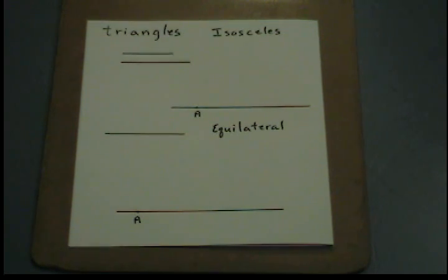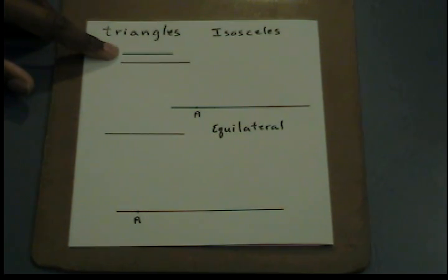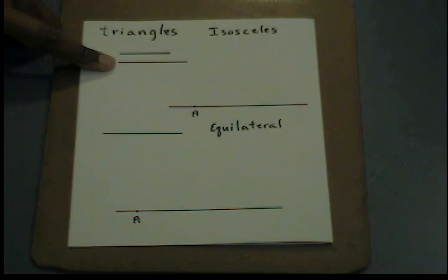So first, in constructing an isosceles triangle, we must first be given two segments. So for our purposes, let's construct one segment that's about an inch and a half in length and a second that's about two inches in length.